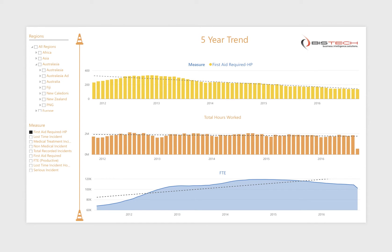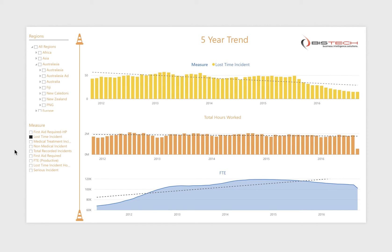The final page in this dashboard displays trend visualisations over a five year period. The measure to be included in the top visualisation can be selected via the measure prompt. Total hours NFT are also included in the bottom two visualisations to enable easy comparison. Trend lines are also included within each visualisation to display the trends over time.